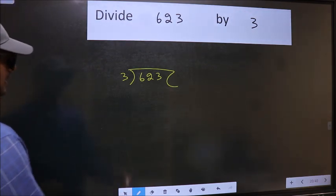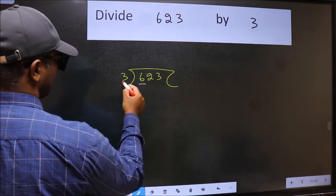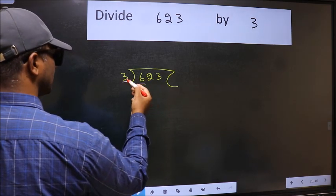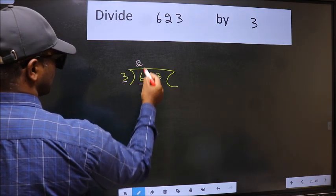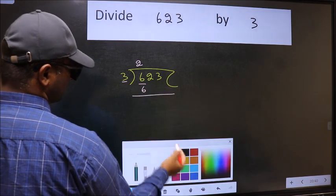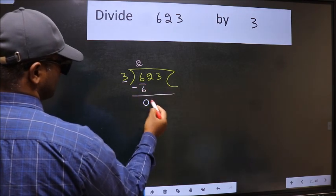Next, here we have 6 and here 3. When do we get 6 in the 3 table? 3 times 2 is 6. Now we should subtract. We get 0.